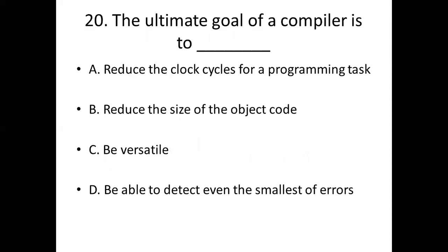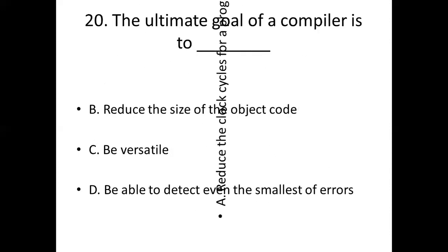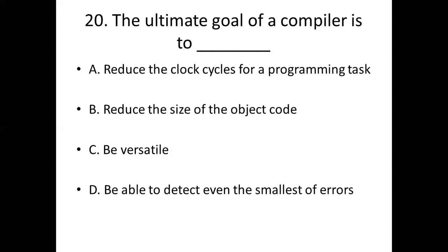Twentieth bit. The ultimate goal of a compiler is to dash. Option A, reduce the clock cycle of a programming task. Option B, reduce the size of the object code. Option C, be versatile. Option D, be able to detect even the smallest of errors. Answer: Option A, reduce the clock cycle of a programming task.